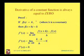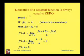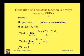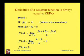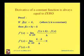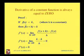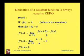Now let us see the proof that the derivative of a constant function is always equal to 0. Suppose f(x) = k, where k is a constant. Then f(x + h) = k as well, because no matter what change we make in x, a constant function remains k.